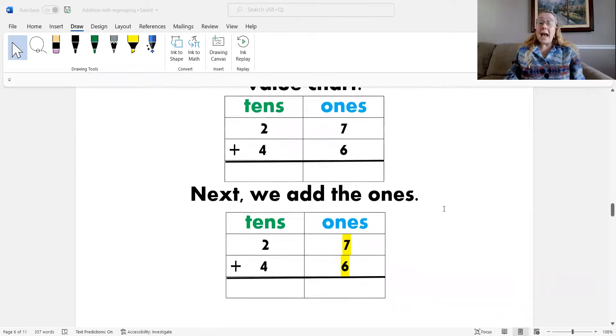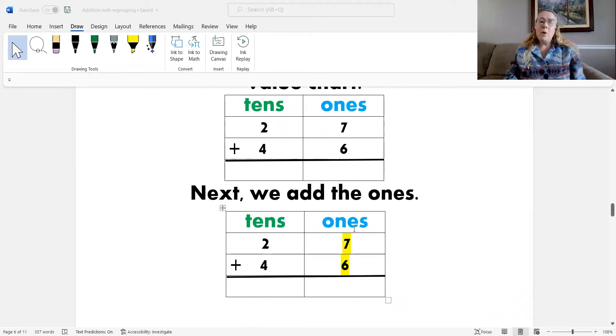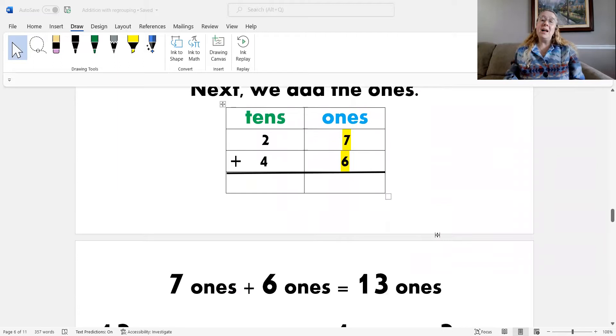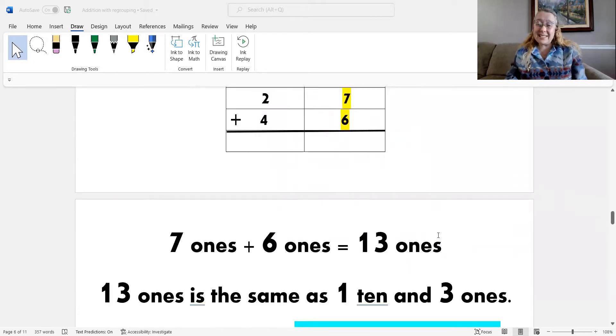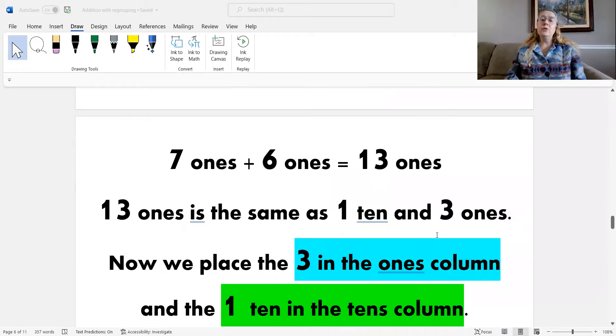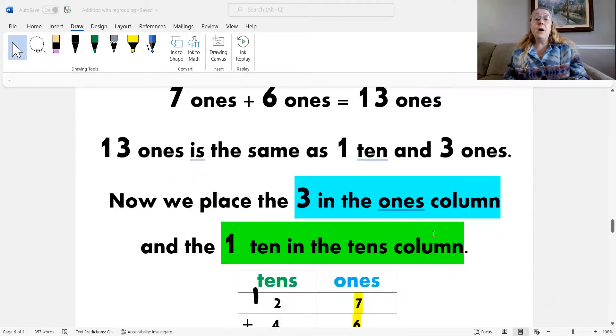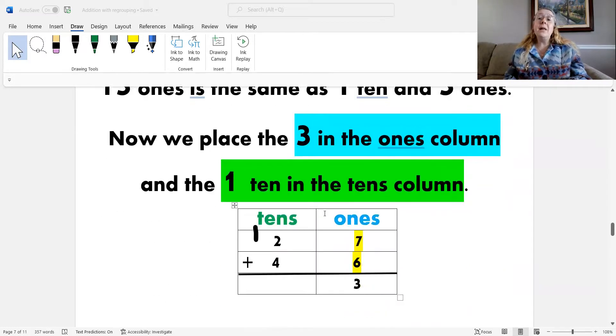Then, we add the ones. But when we added 7 plus 6, that's 13. So, we have to think about 13 being the same as 1 ten and 3 ones. And then, we place the 3 ones in the ones column and the 1 ten in the tens column.